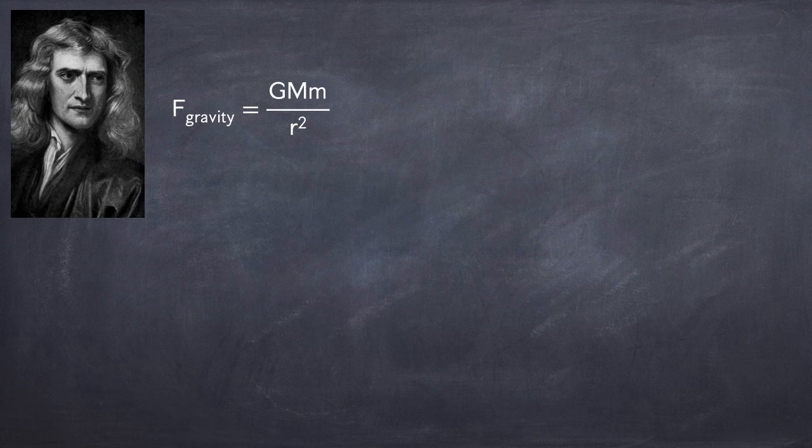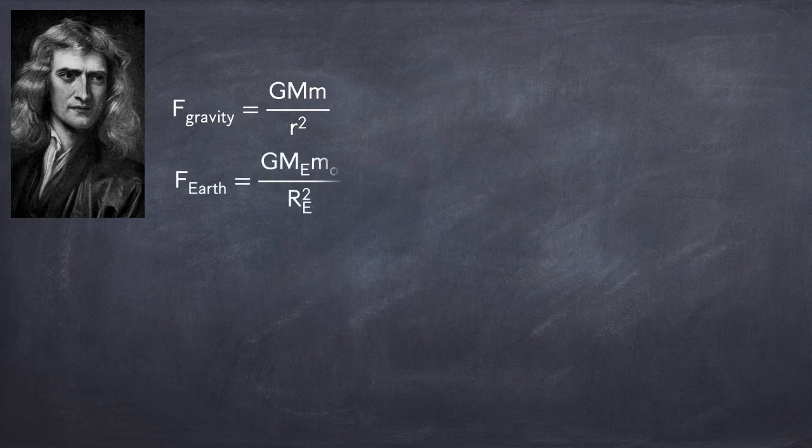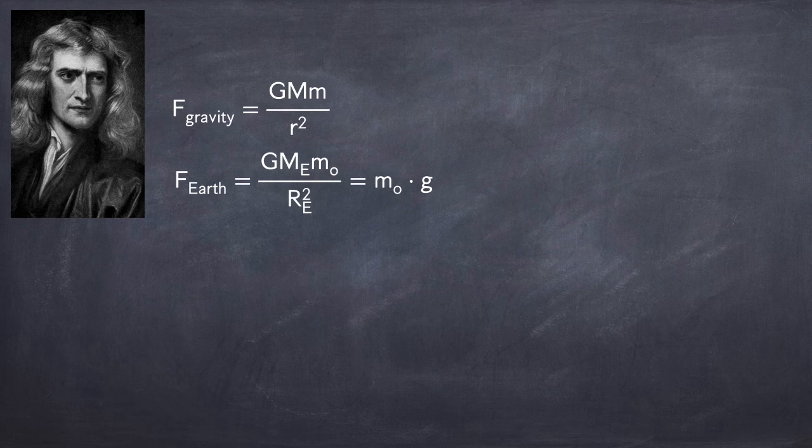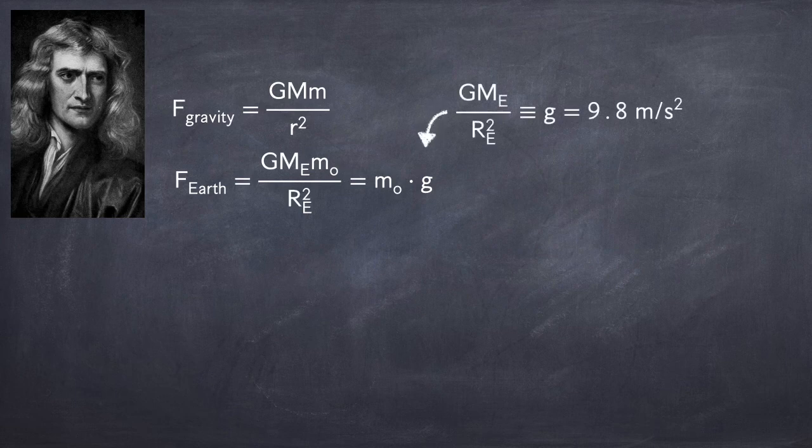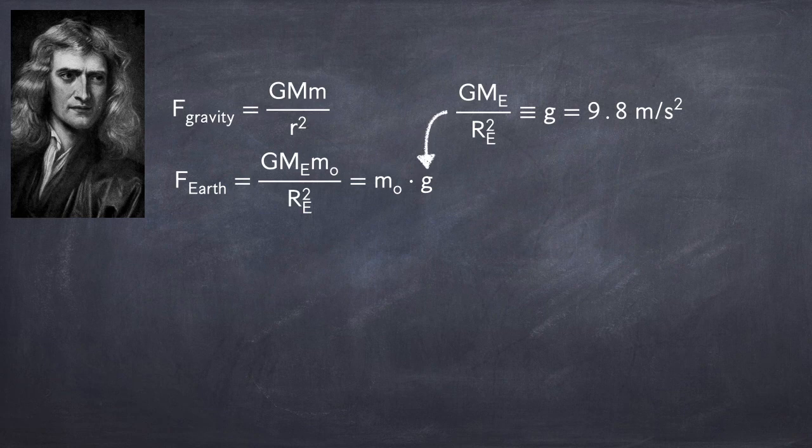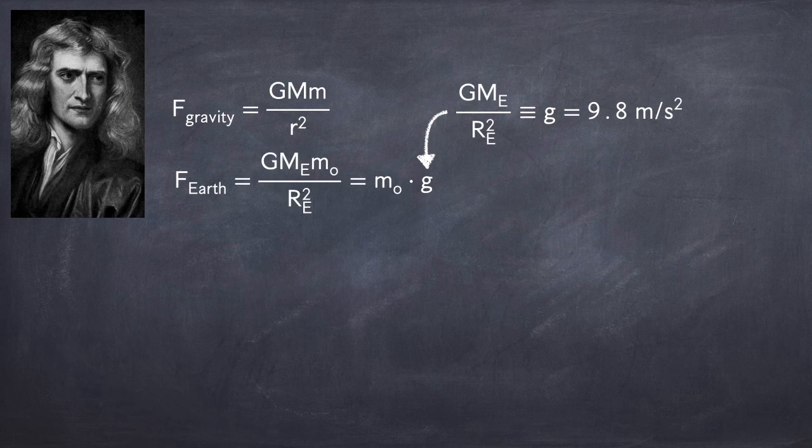And so, for an object sitting on the surface of the Earth, the gravitational force it will feel is capital G times the mass of the Earth times the mass of the object divided by the distance to the center of the Earth, which is just the radius of the Earth. This can be rewritten as the mass of the object times little g, where little g is just the acceleration due to gravity at the surface of the Earth, and it's equal to capital G times the mass of the Earth divided by the radius of the Earth squared. And this value is easily measured and is equal to 9.8 meters per second squared.